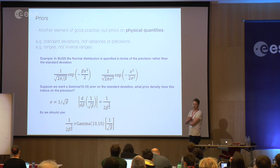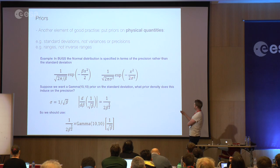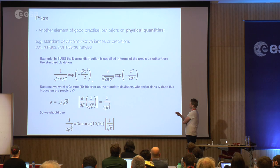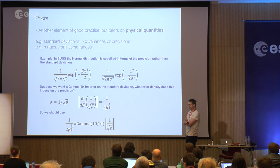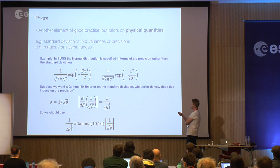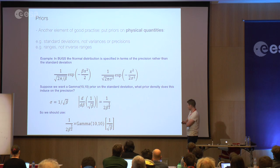In the BUGS and JAGS software packages, the normal distribution takes a precision parameter — the inverse of the standard deviation squared — rather than a standard deviation. Because BUGS has been so influential in epidemiological and other studies, this parameterization choice has really undermined a lot of statistical results, because it's so unintuitive to choose a prior on something you can't reason about physically.